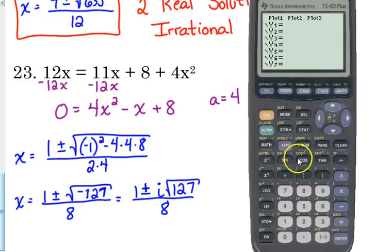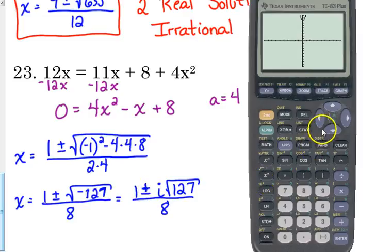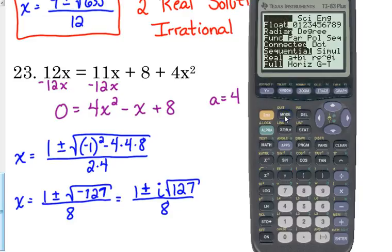If we graph 4x squared minus x plus 8, it does not cross the x-axis — it's way up above it — which confirms there are no real solutions and we have imaginary solutions instead. Imaginary solutions come in pairs: 1 plus i times the square root of 127 over 8, and 1 minus i times the square root of 127 over 8. To check these on your calculator, go to Mode and change the setting from Real to a complex number mode.